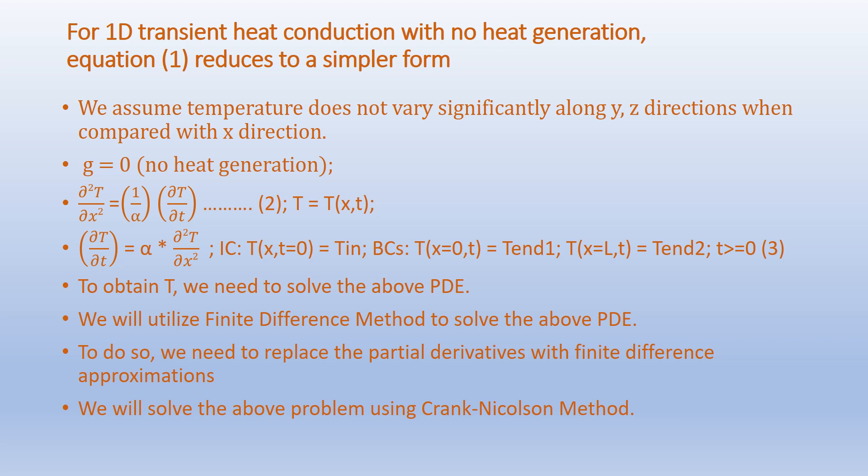Accordingly, we get ∂²T/∂x² = (1/α)(∂T/∂t), where temperature T is a function of x and time. This can be rearranged as ∂T/∂t = α(∂²T/∂x²). To solve this PDE we need one initial condition and two boundary conditions. The initial condition is T(x, 0) = T_in. The boundary conditions are T(0, t) = T_n1 and T(L, t) = T_n2 for t ≥ 0. To solve the above PDE we will utilize the finite difference method, replacing the partial derivatives with finite difference approximations using the Crank-Nicolson method.